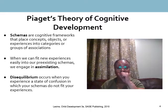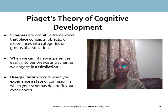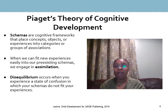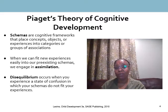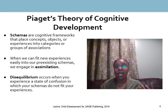Piaget described cognitive development within four stages. He felt that we're always actively trying to make sense of our experiences in order to adapt with the environment and ensure survival. Making sense means organizing experiences into what he called schemas — cognitive frameworks that take concepts of objects and experiences and categorize them into groups of associations. Each person is unique in organizing those experiences based on the schemas they develop.